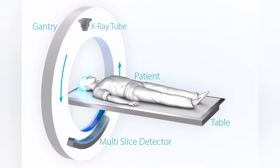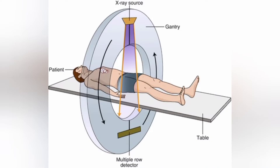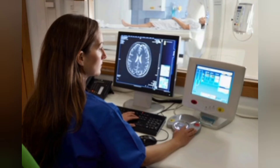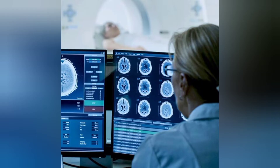The technician positions the patient on the table, and the table is then moved inside and outside as per the required images. As the gantry moves around the patient, images are taken from different angles. These images are then sent to the computer in the radiologist's cabin and are processed to create three-dimensional images.